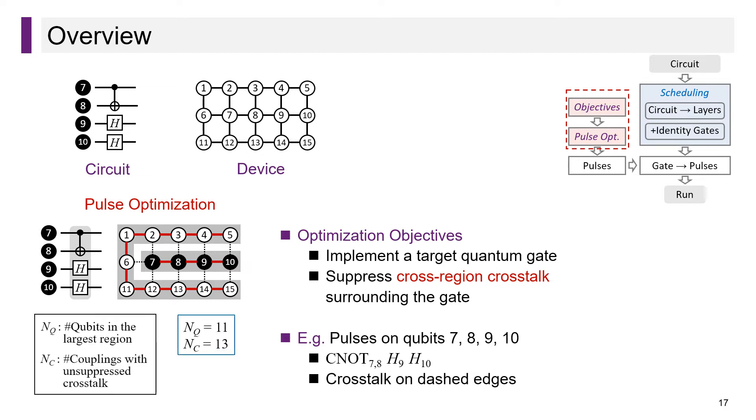To characterize suppression performance, we introduce two metrics: N_q and N_c. N_q is the number of qubits in the largest region. Here, the largest region is the one consisting of 11 white vertices. The other metric, N_c, is the number of couplings with unsuppressed crosstalk. In other words, the number of solid edges. Here we have 13 solid edges. For both metrics, smaller values mean better suppression.